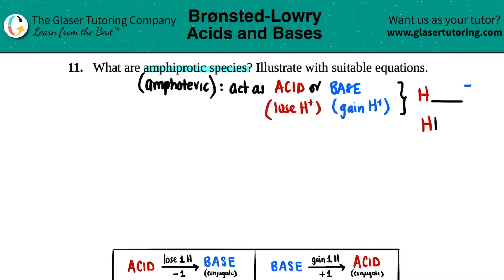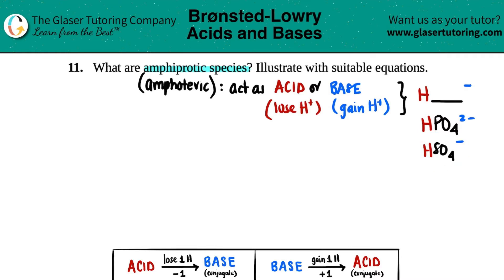If you see something like that, it's definitely an amphiprotic species. For example, HPO₄²⁻ — it's got both properties. HSO₄⁻ — definitely amphiprotic, it has both of them. HS⁻ — definitely amphiprotic, it can go both ways because you can lose that hydrogen or you can gain a hydrogen by manipulating that charge.